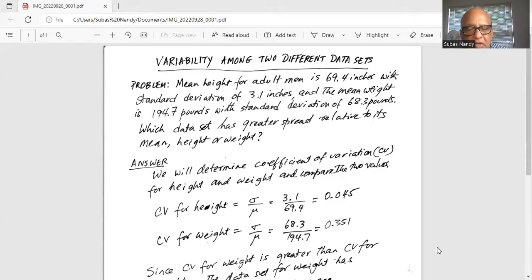That is standard deviation divided by mean. 68.3 divided by 194.7 is 0.351.